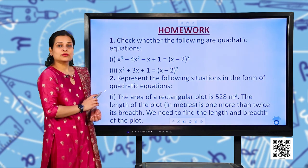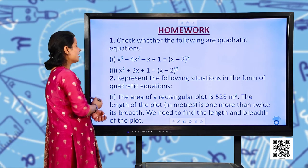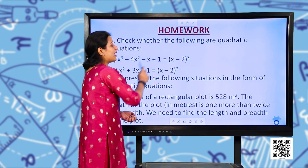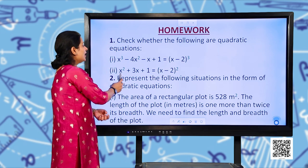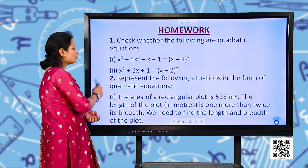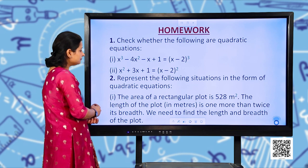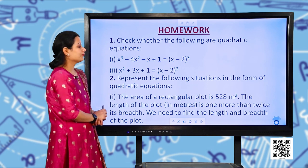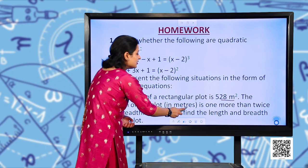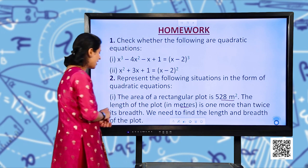Now here are a few questions for your home assignment. Question 1: Check whether the following are quadratic equations — (i) x³ − 4x² − x + 1 = (x − 2)³ and (ii) x² + 3x + 1 = (x − 2)². Question 2: Represent the following situation — the area of a rectangular plot is 528 m². The length is one more than twice its breadth. Find the length and breadth.